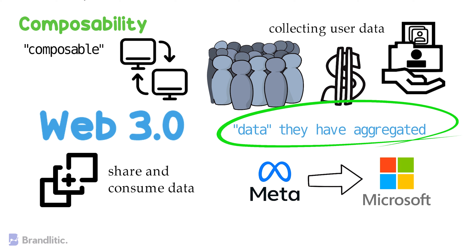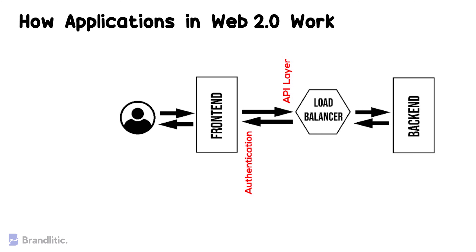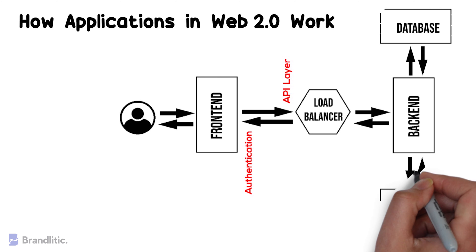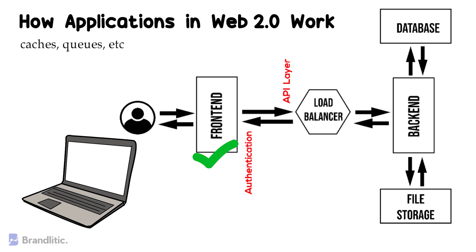In order to understand Web 3.0 architecture, it's first crucial to know how Web 2.0 applications worked. In a traditional Web 2.0 application, a user interacted with the front end, which was closely tied to the backend through a load balancer, wherein an API layer and authentication performed their respective functions. The backend shared data with the front end after conducting a series of interactions with its database and file storage, and all these components worked hand-in-hand to deliver a seamless experience.